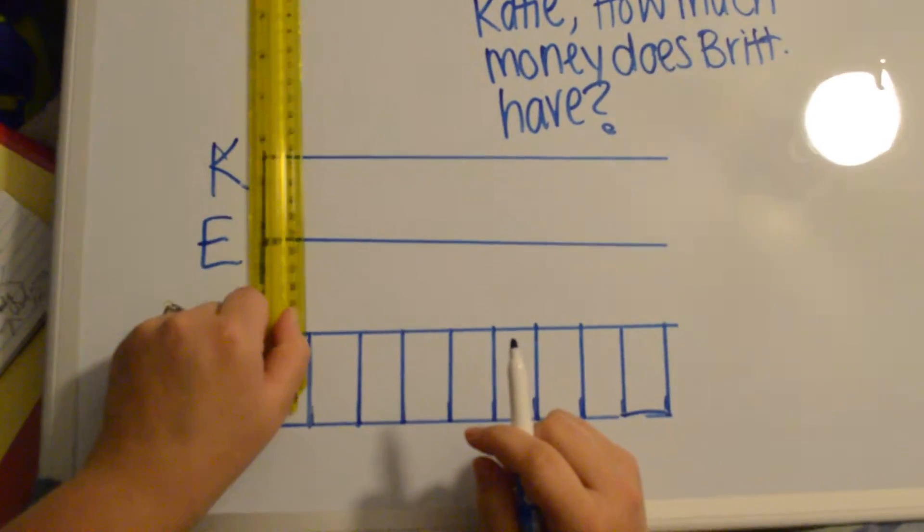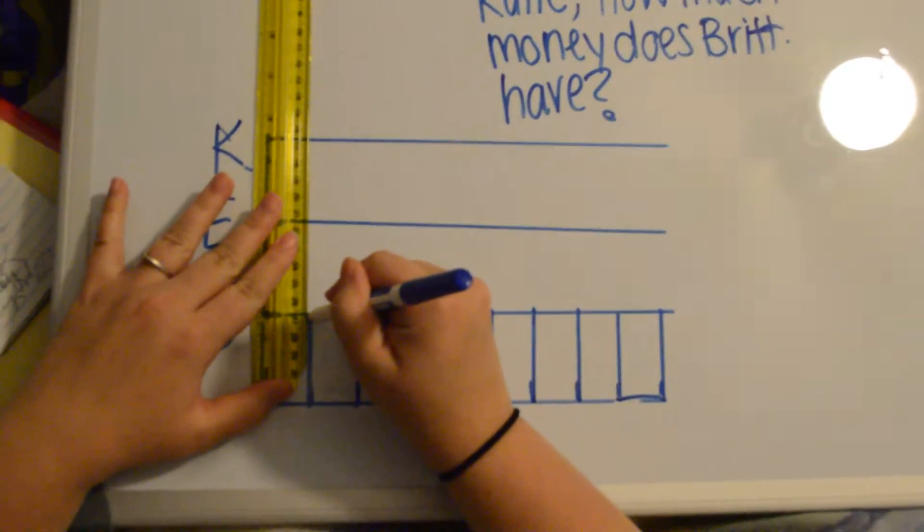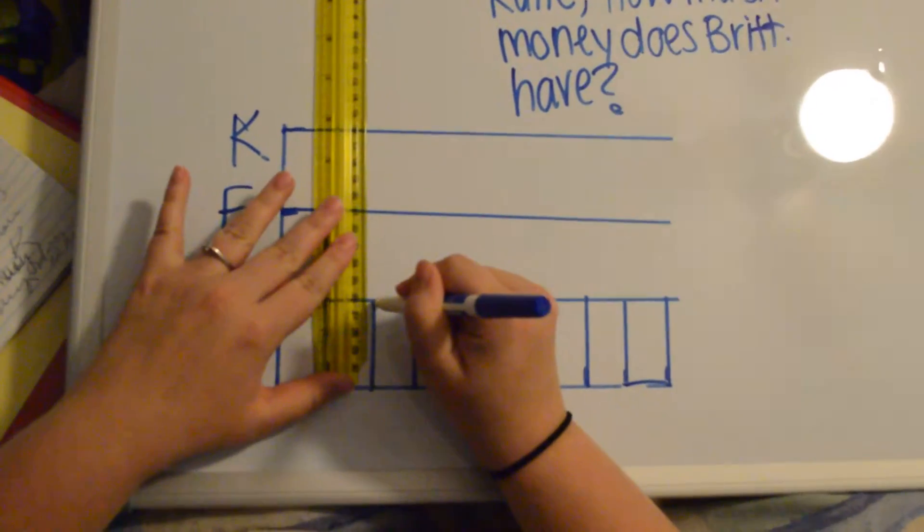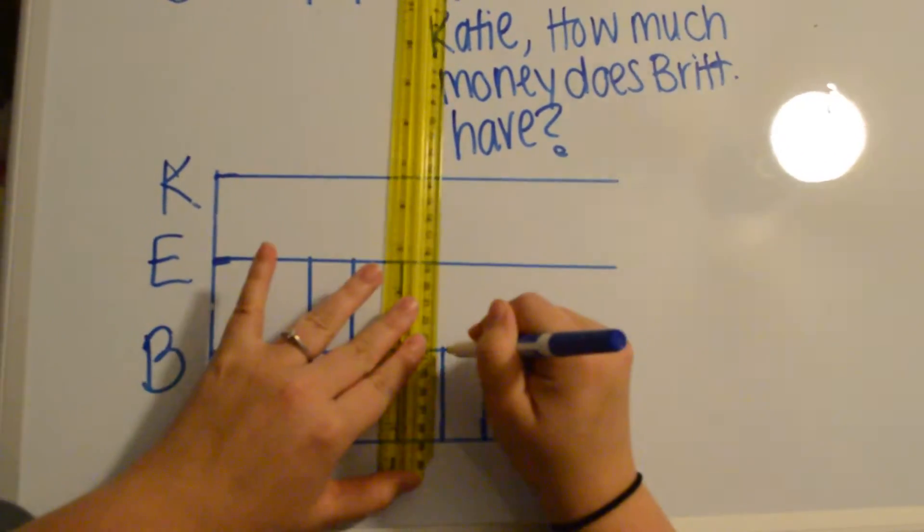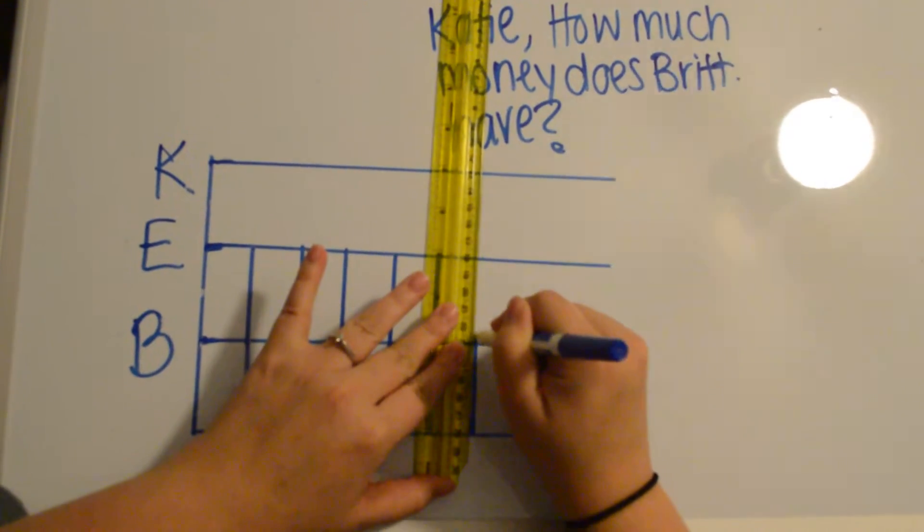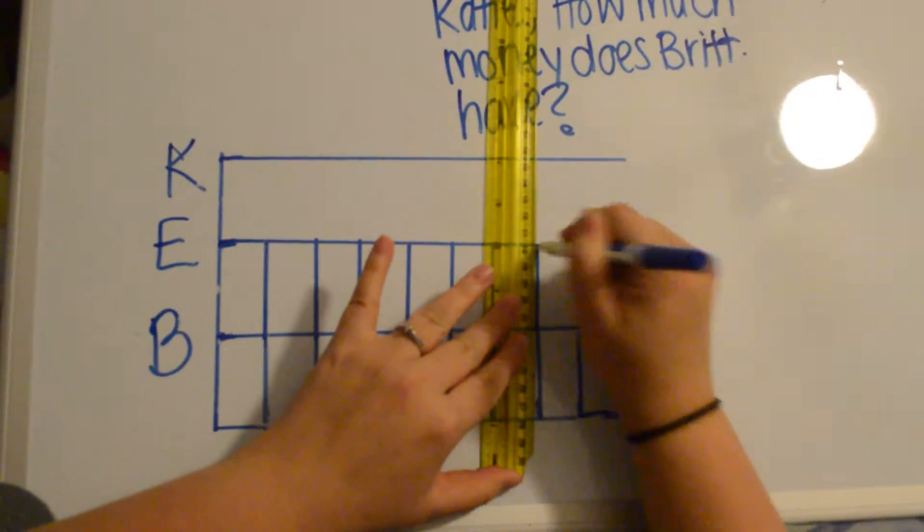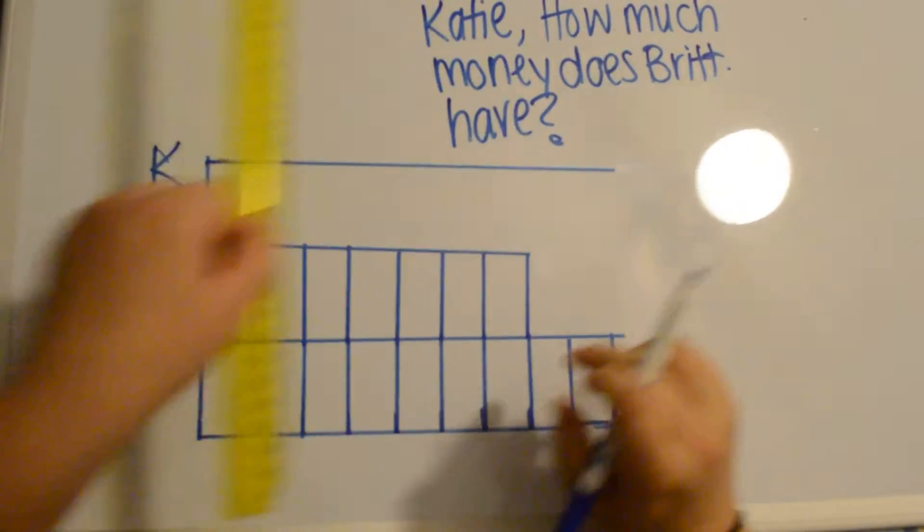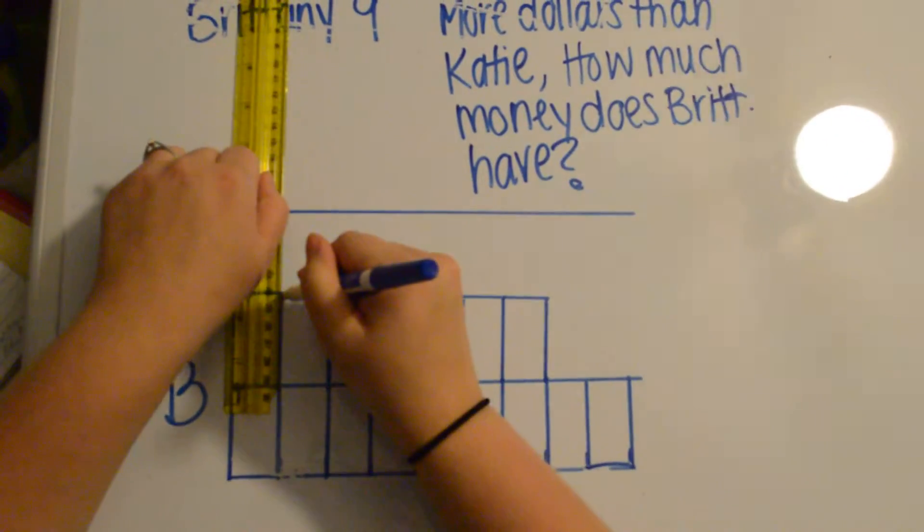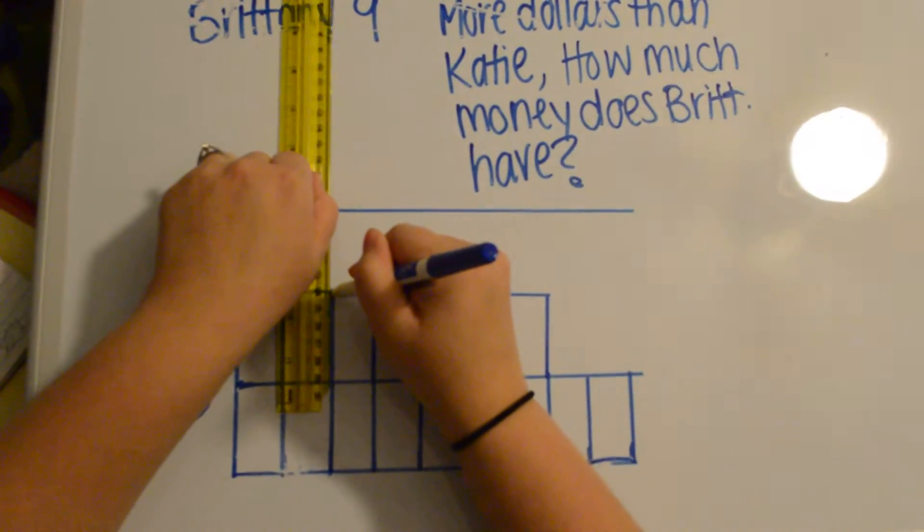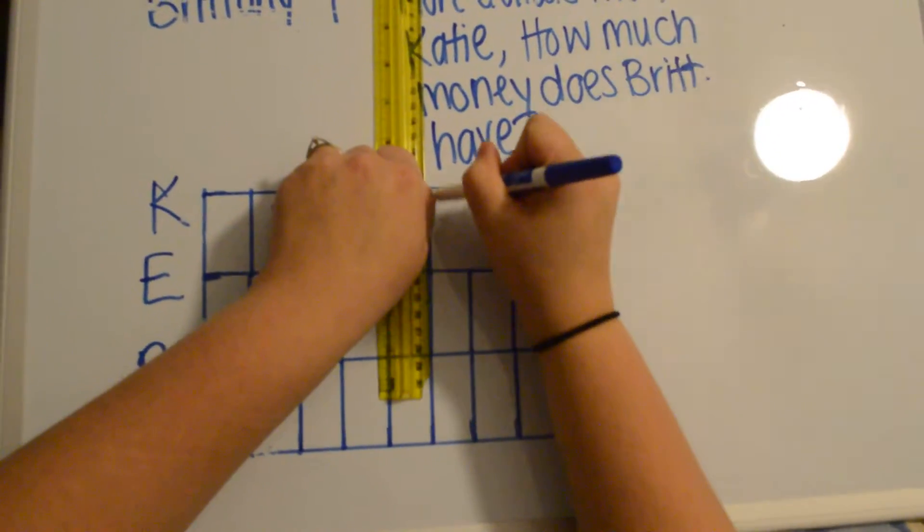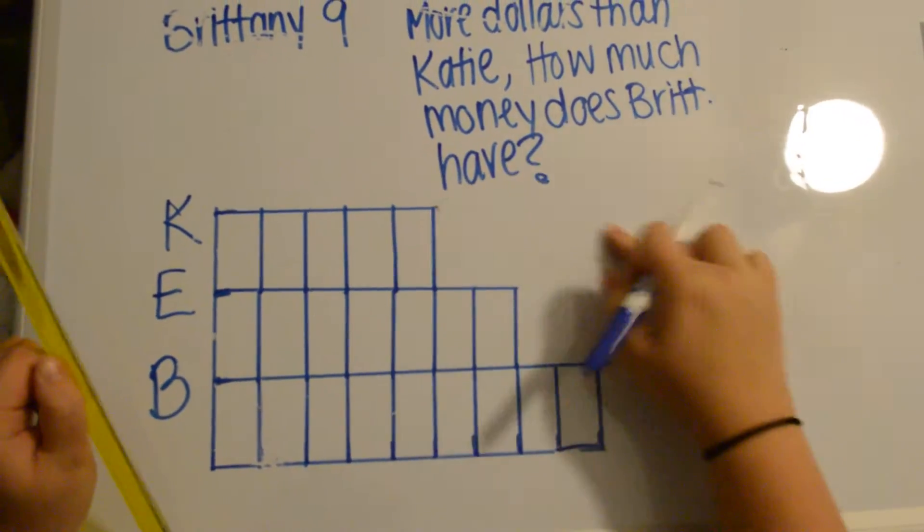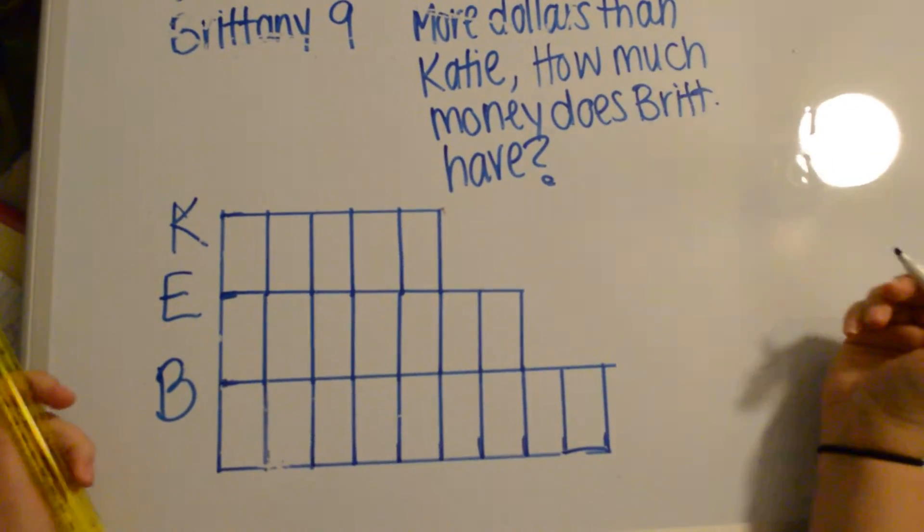Elaine has 7, so we're going to copy and make them the same size: 1, 2, 3, 4, 5, 6, 7. And then Katie has 5: 1, 2, 3, 4, 5. Now we have our ratio drawn out.